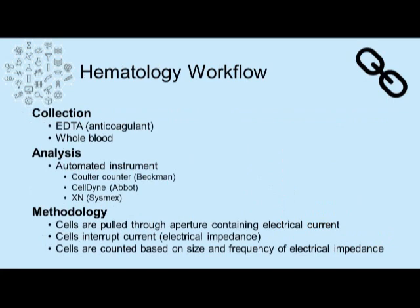So before we start hematology testing, we need to collect the sample. To do that, we need an anticoagulant tube, and most often that is an EDTA tube. EDTA acts as an anticoagulant and prevents our blood from clotting. We test whole blood samples in hematology — blood that has been collected, mixed with an anticoagulant, and unspun, so it is whole blood.